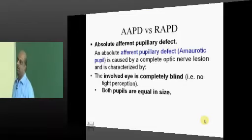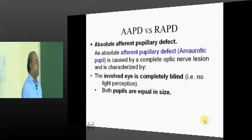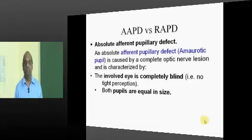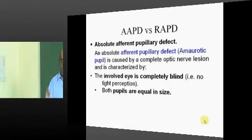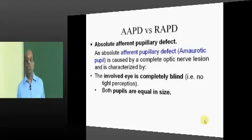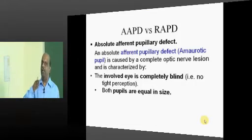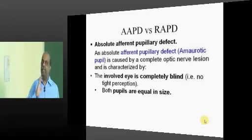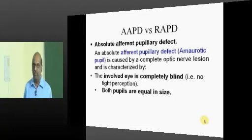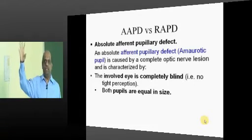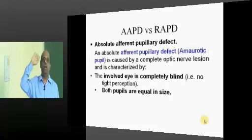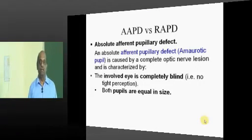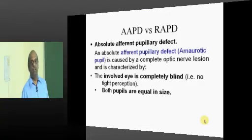We need to understand AAPD and RAPD. AAPD means absolute afferent pupillary defect. The afferent in the light reflex pathway is the optic nerve and retina — anything up to the optic chiasma is afferent. If there is a complete retinal detachment and the retina is totally gone, you get an absolute afferent pupillary defect.